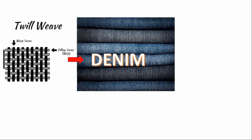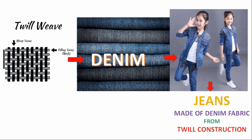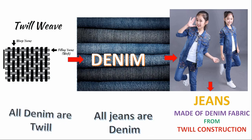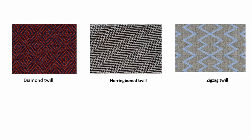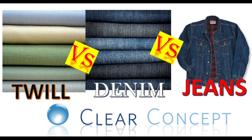Let's summarize the video. All denim fabric is made of twill construction, and all jeans are made from denim fabric. So all jeans are denim, and all denim are twill. But there are lots of derivatives of twill construction — like diamond twill, herringbone twill, and zigzag twill — which are not denim. So all twill are not denim. If you like this video, please subscribe.